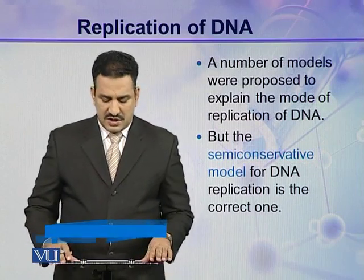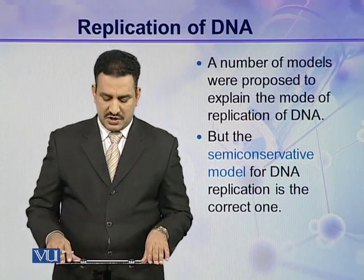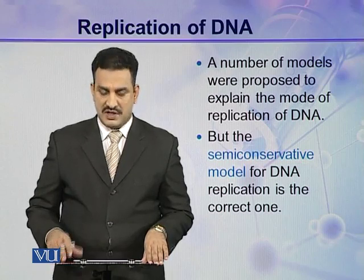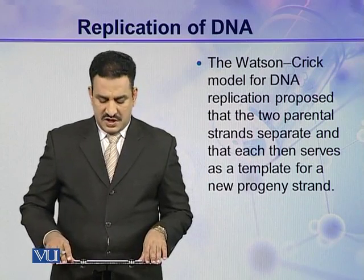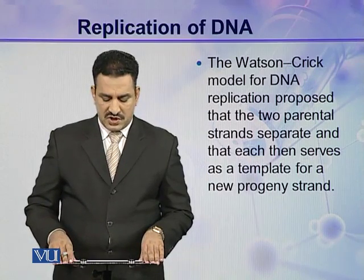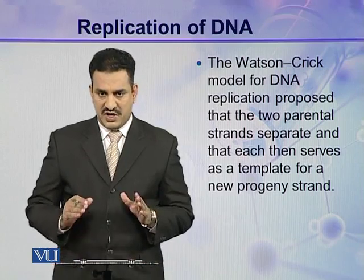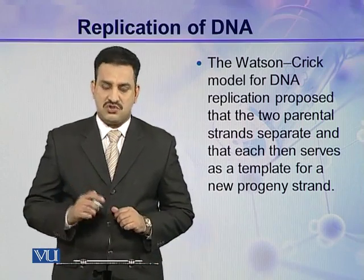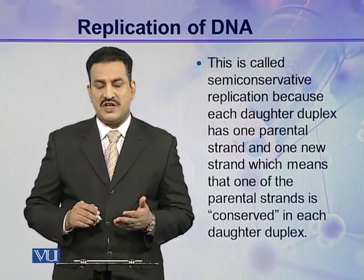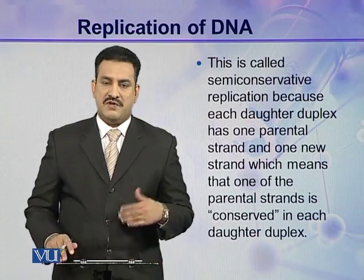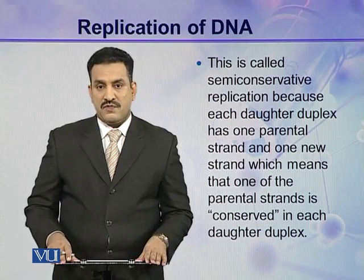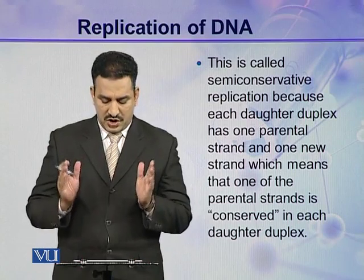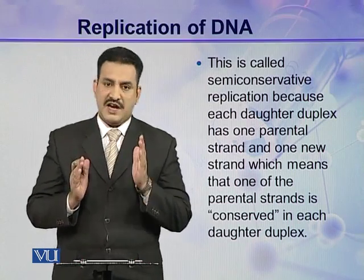A number of models were proposed to explain the mode of replication in DNA, but the semi-conservative model for DNA replication is the correct one. The Watson and Crick model proposed that the two parental strands separate and then each strand serves as a template for the synthesis of a progeny strand. This type of replication is called semi-conservative replication because each daughter duplex has one parental strand and one new strand.